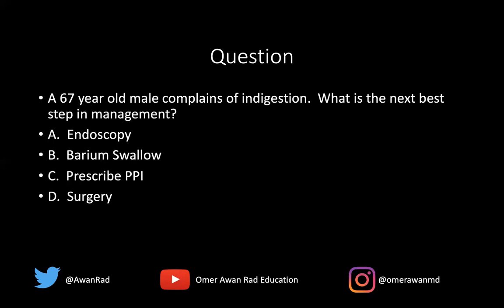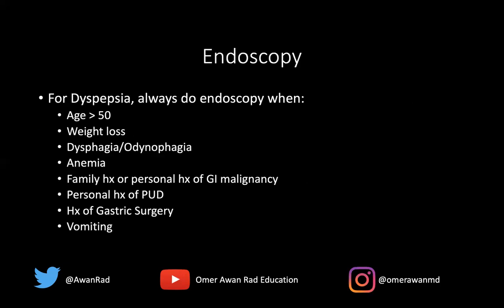Here's a question: a 67-year-old male complains of indigestion or dyspepsia. What's the next best step in management — endoscopy, barium swallow, prescribe a PPI, or surgery? The answer is endoscopy because the patient is 67 years old. There are alarm symptoms that the USMLE expects you to know. Anyone presenting with indigestion or dyspepsia with one of the following automatically gets endoscopy: age greater than 50, weight loss, dysphagia, difficulty swallowing, pain with swallowing, anemia, family history, personal history of GI malignancy, personal history of peptic ulcer disease, history of gastric surgery, or vomiting. Make sure you know these alarm symptoms.